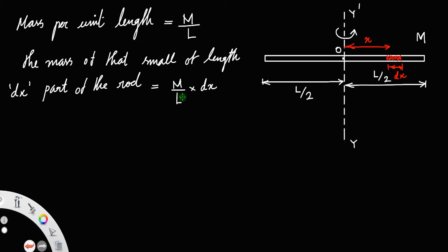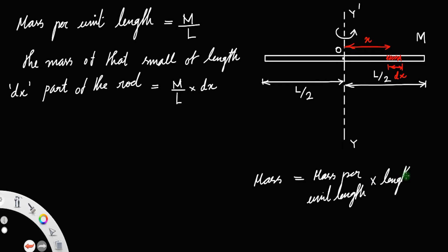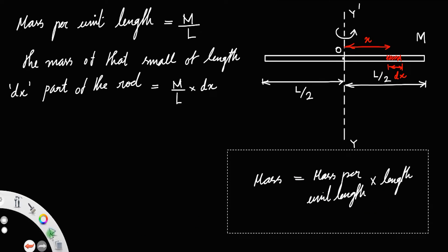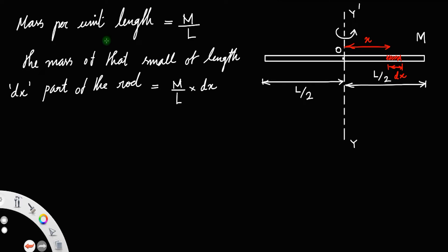The mass of this small part will be m/l into dx, since mass equals mass per unit length into length. We call this small mass dm, that is dm = (m/l)dx. Let us take that as equation number one.